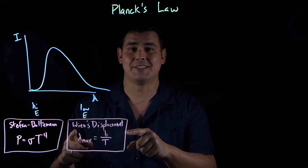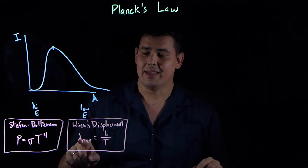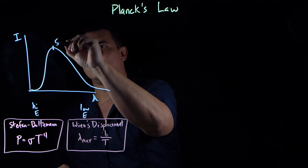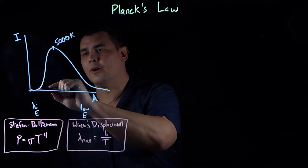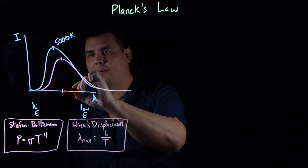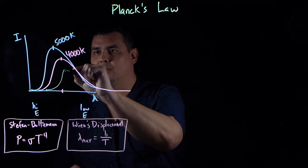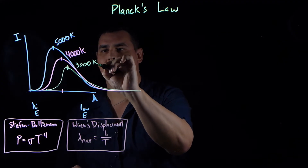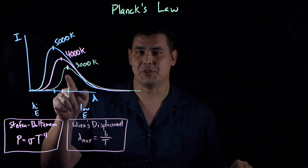The other law they knew was called Wien's displacement law, which says the peak wavelength is equal to some constant divided by the temperature of the black body. So if you have a curve at 5,000 Kelvin and then do one at 4,000 Kelvin, the peak wavelength shifts over. At 3,000 Kelvin, it shifts even more. The peak wavelength is inversely proportional to the temperature of the object.